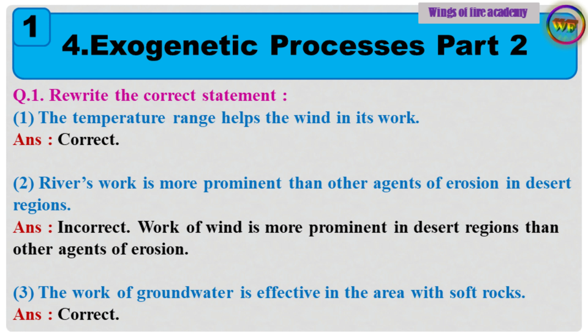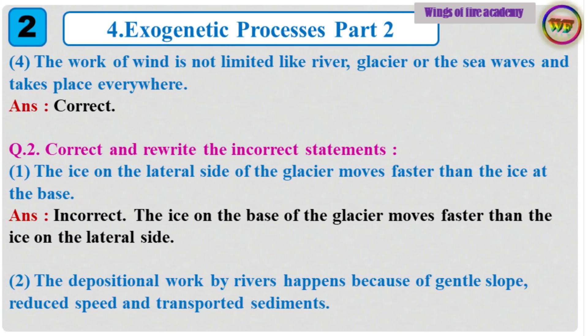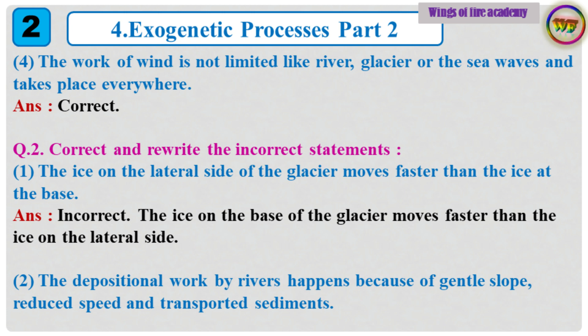Question 1: Rewrite the correct statement. 1. The temperature range helps the wind in its work. Answer: Correct. 2. River's work is more prominent than other agents of erosion in desert regions. Answer: Incorrect. The correct statement is: Work of wind is more prominent in desert regions than other agents of erosion. 3. The work of groundwater is effective in the area with soft rocks. Answer: Correct. 4. The work of wind is not limited like river, glacier or the sea waves and takes place everywhere. Answer: Correct.